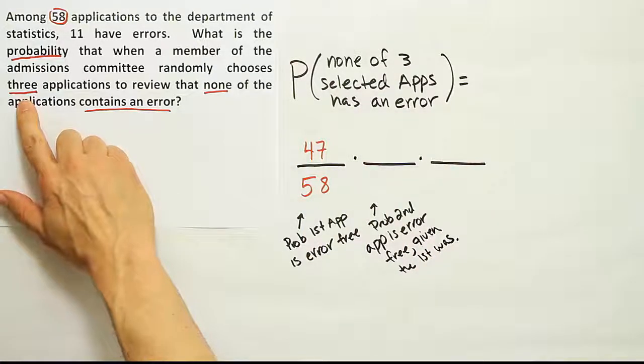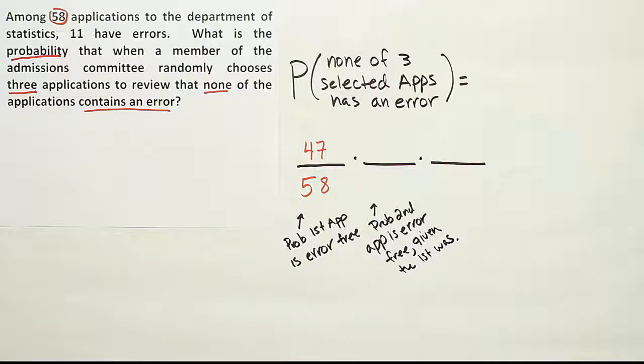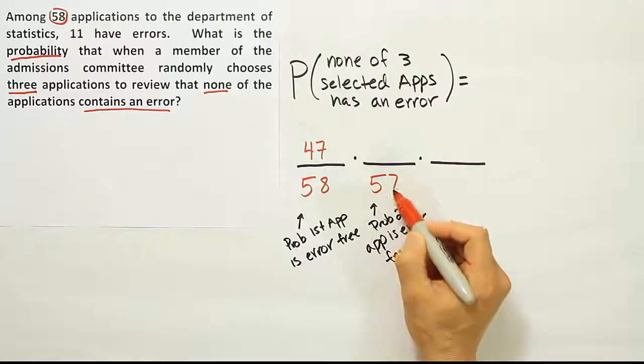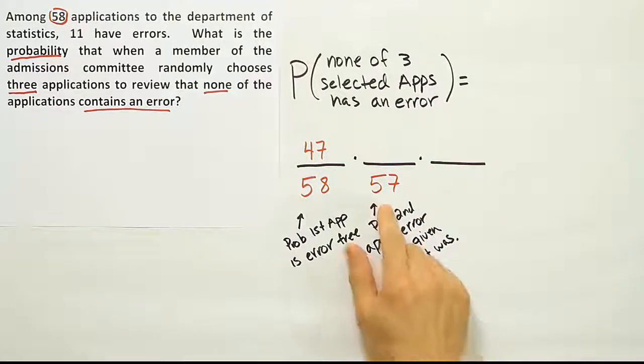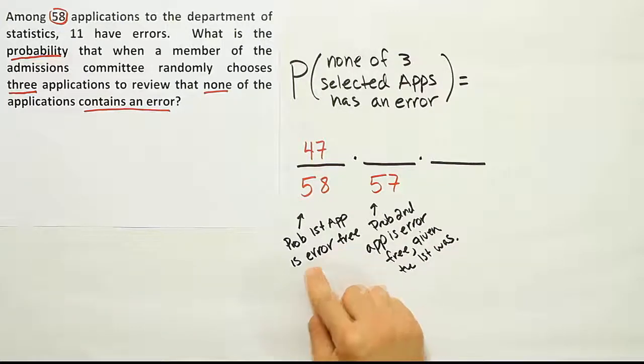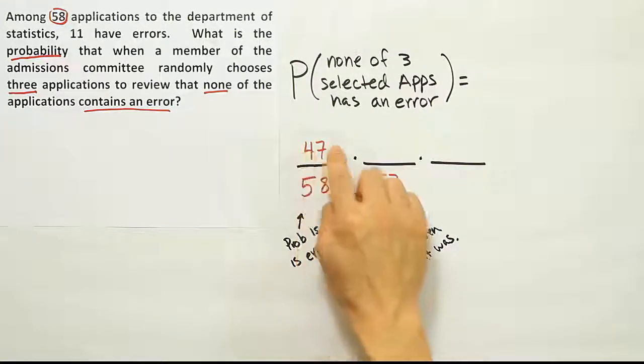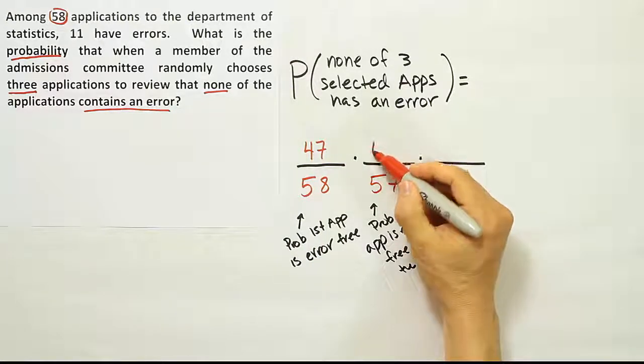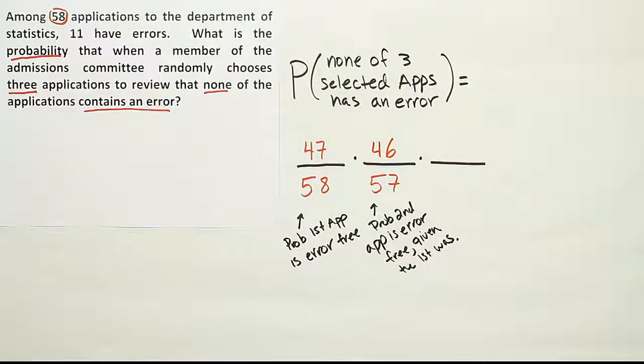If he's looking to admit someone to the department, he's not going to keep grabbing the same application over and over again. He would put it aside and go in and get another application. That means when he goes back in, he's not going to have 58 total applications to choose from, he's only going to have 57. So this is a dependent scenario. And assuming that the first one was error free, there won't be 47 applications without errors, but now there will only be 46 left for him to choose from.